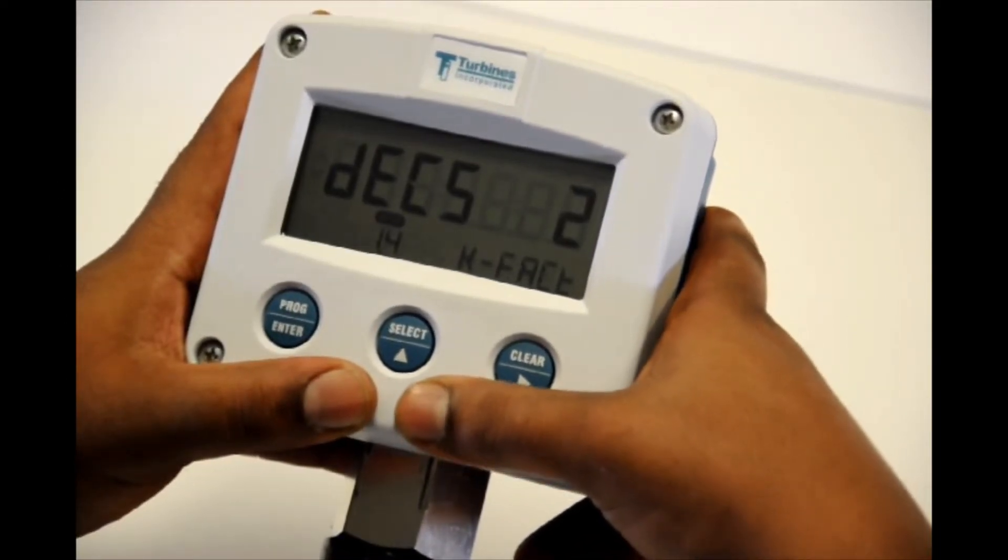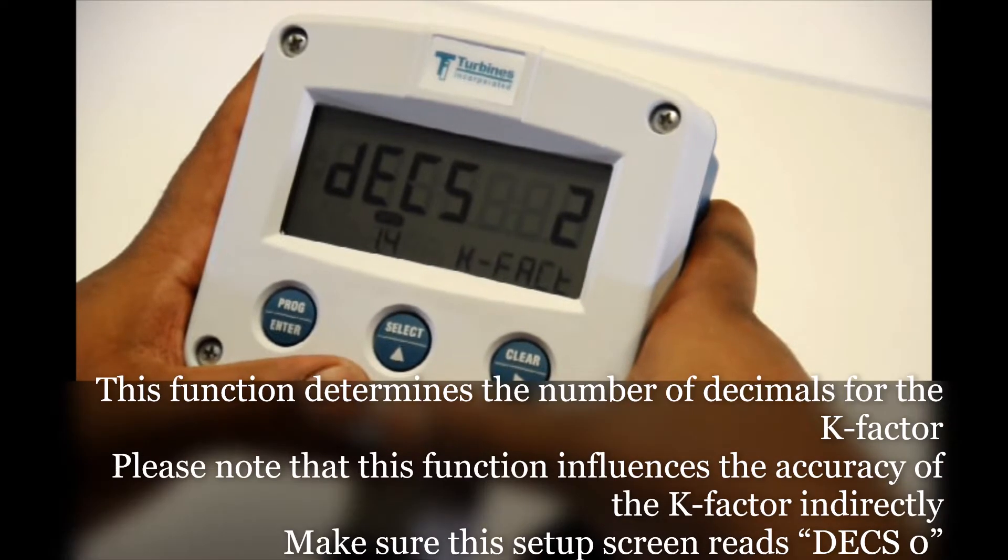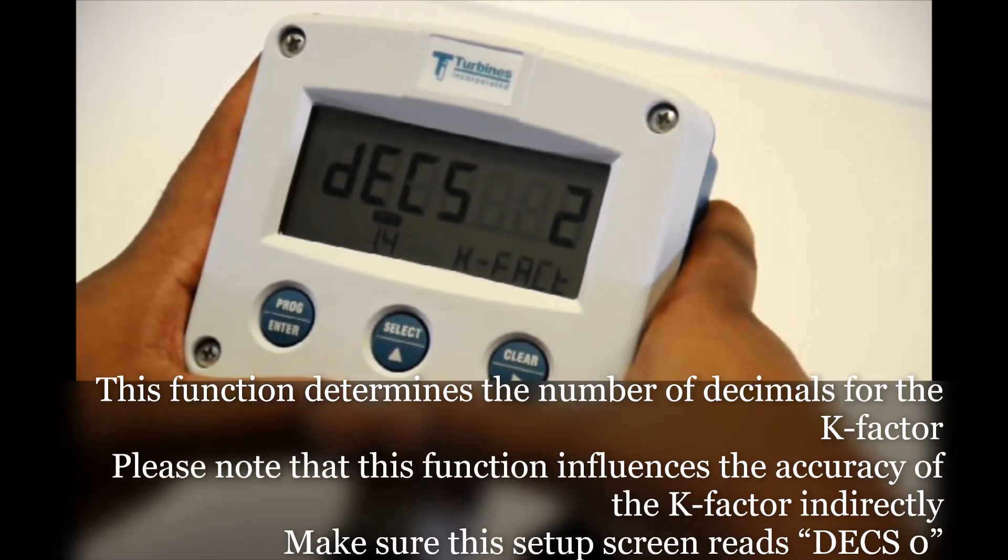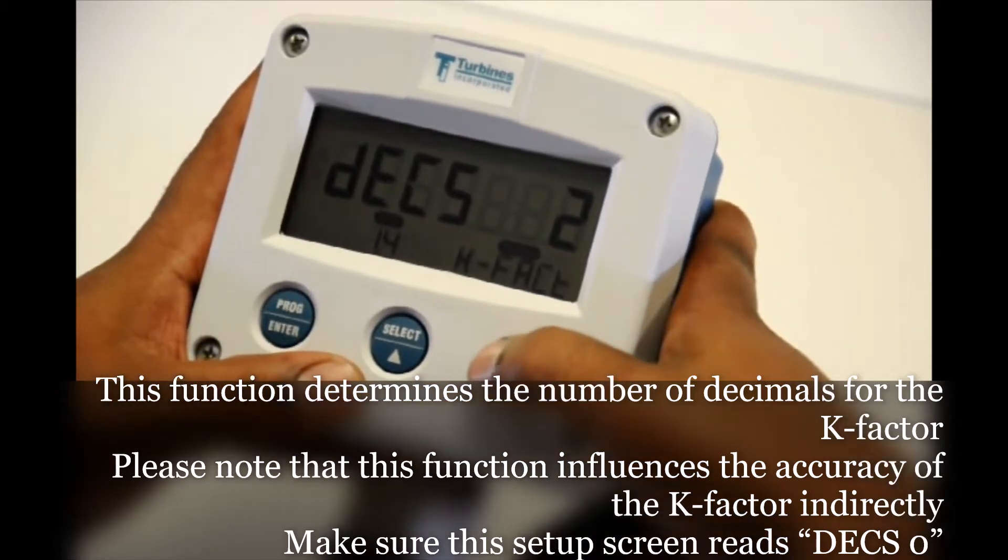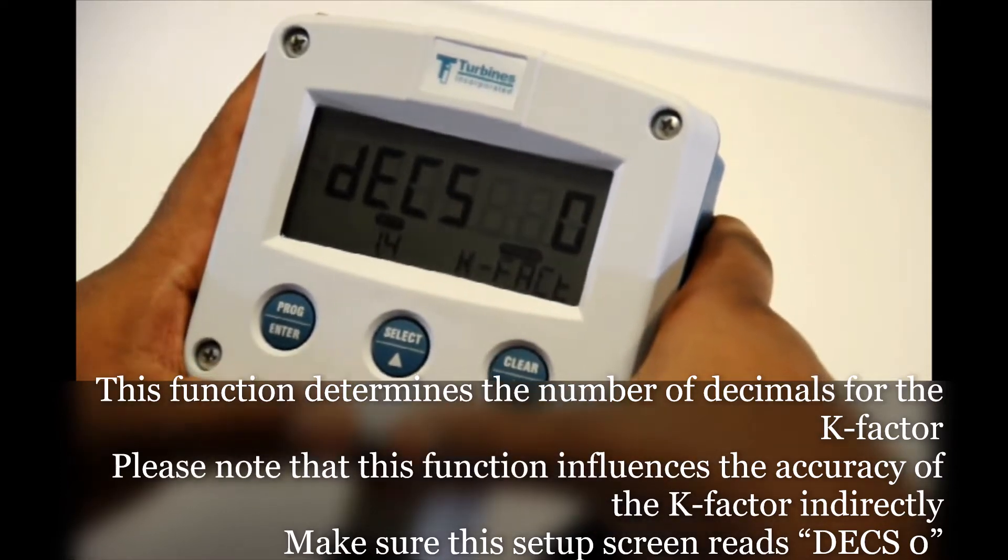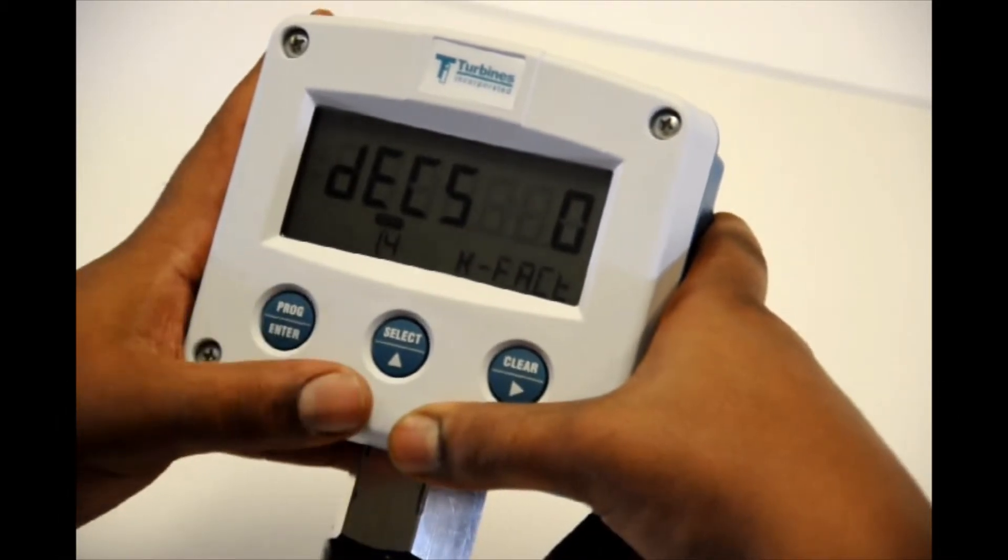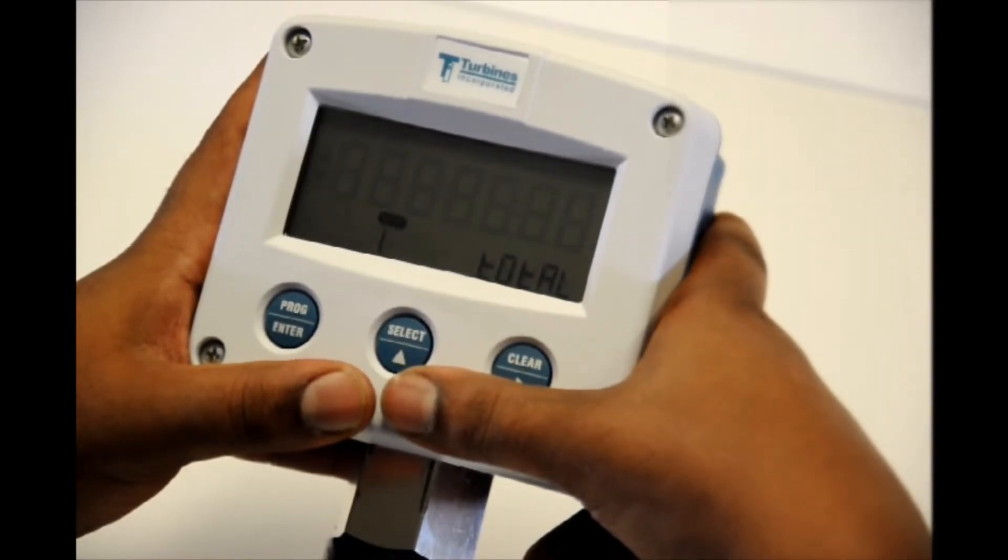Now if we need to put decimals into that K factor we can do so here again with the decimals. Now in this case our thirteen four forty number is a whole number. So hit program enter. We're going to change DCS to a zero signifying no decimal point needed. Program enter will lock that in. And hit select to get to our next tier and back to one total.